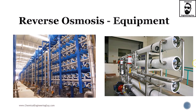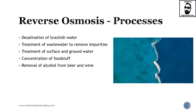In membrane technology, you won't encounter a huge single tower for reverse osmosis. Instead, you have many cartridge or piping systems — lots of pipes and repeated unit operations housing the membranes. Beyond desalination of brackish water, there are many other applications for reverse osmosis: treatment of wastewater to remove impurities, treatment of surface and groundwater, concentration of foodstuffs, and removal of alcohol from beers, wines, and spirits.